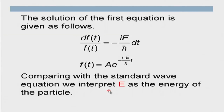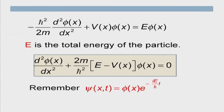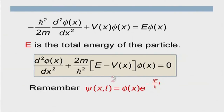What remains is the second equation — the time-independent Schrödinger equation: −ħ²/(2m) d²phi/dx² + V(x)phi = E·phi. The solution phi here may be real since there is no imaginary unit in this equation. But the actual wave function is always psi(x,t) = phi(x)·e^(−iEt/ħ), which is always complex. So while the solution of the time-independent Schrödinger equation can be real, the overall wave function will always be complex.